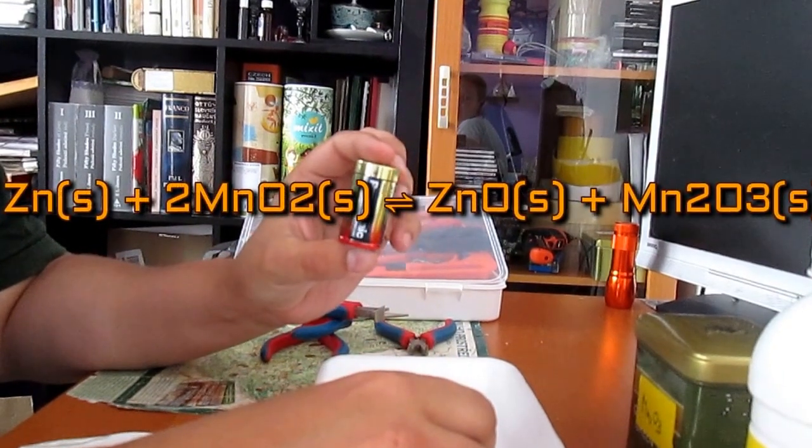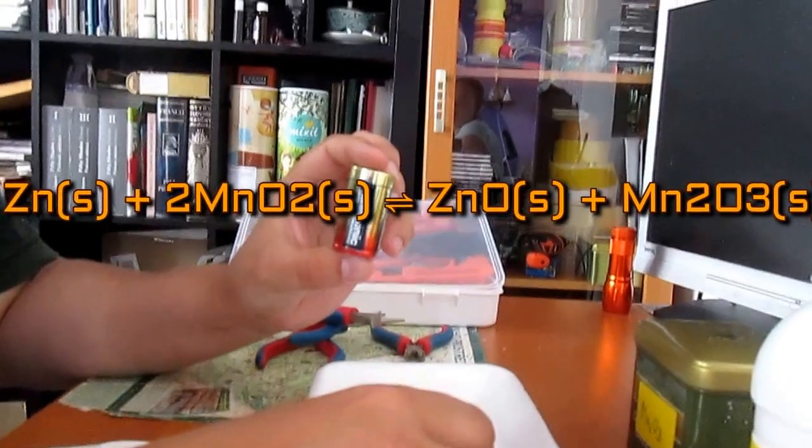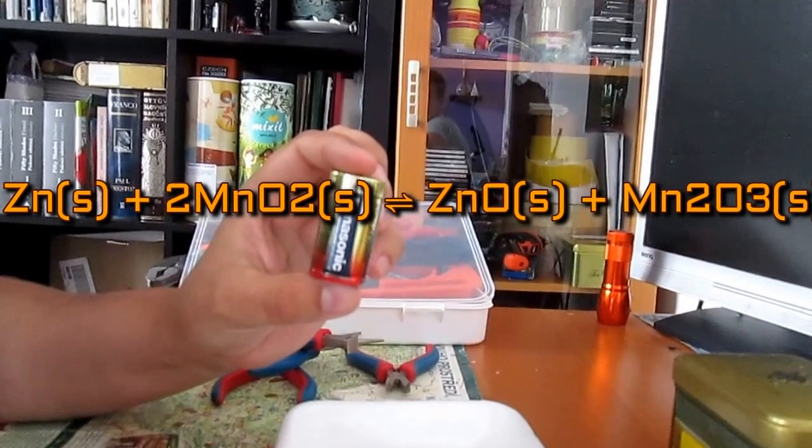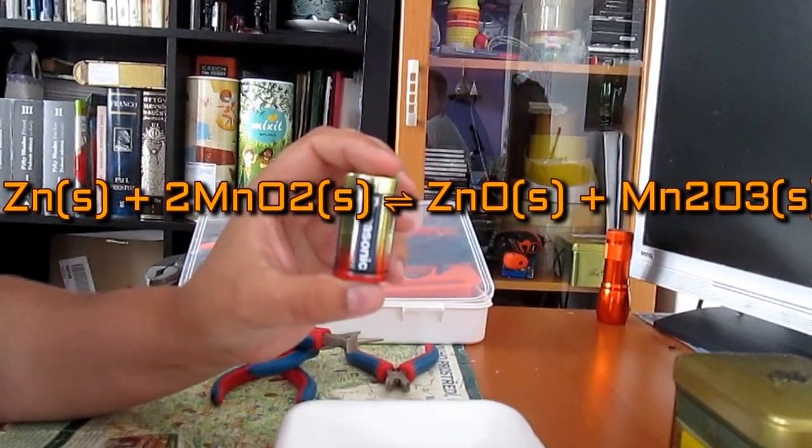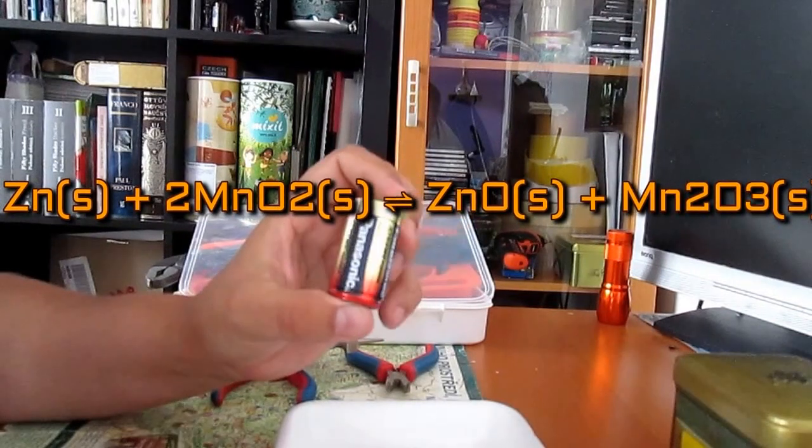We are in fact scrapping a discharged battery, so the compounds we are after are manganese oxide and zinc oxide.